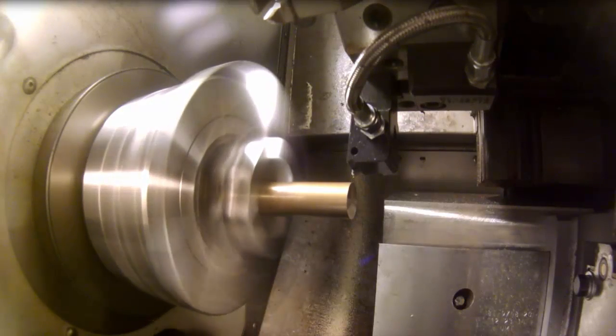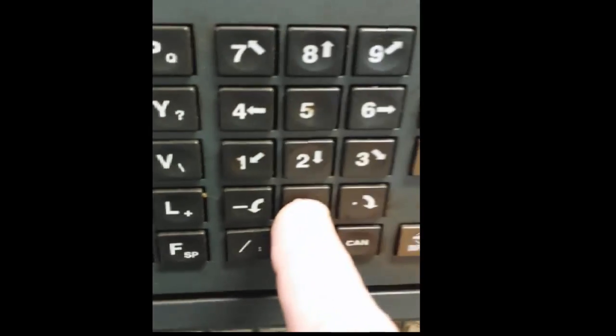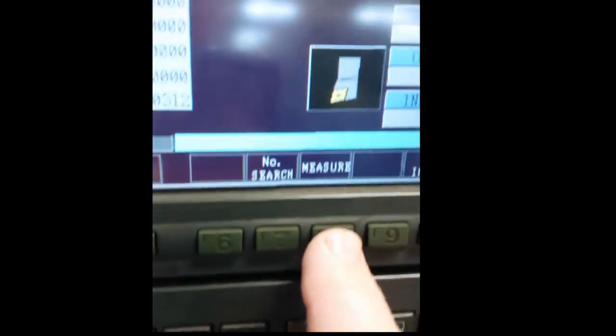At that point you leave Z right there. Turn the spindle off. Select the offset page and hit Z0 and measure.